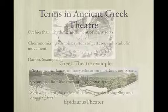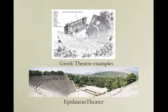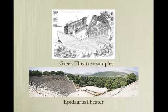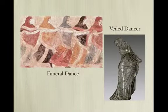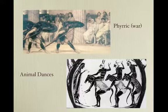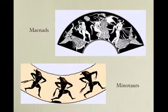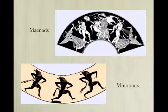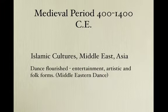Sirtos still endures today — if you go to a Greek festival you will probably dance it. Here are photos of some Greek theaters. There's a video on the course site showing how the acoustics work: if an actor stands in the center, their voice projects over the whole stadium — amazing technology with no technology at all. Photos also show a veiled dancer, a funeral dance, animal dances, mythological creatures, and the pyrrhic dance. Maenads — followers of Dionysus — would go into trance and dance wildly.